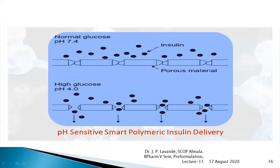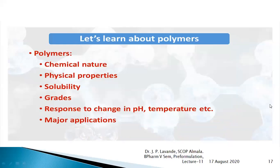pH-sensitive polymeric materials respond to changes in the pH of the surrounding medium, causing their degradation, creating pores, and releasing the drug content. You can study multiple examples of polymers — their chemical nature, physical properties, solubility, grades, and how they respond to changes in temperature and pH. Understanding major applications of polymers will be useful for designing and modifying dosage forms and for further higher studies.